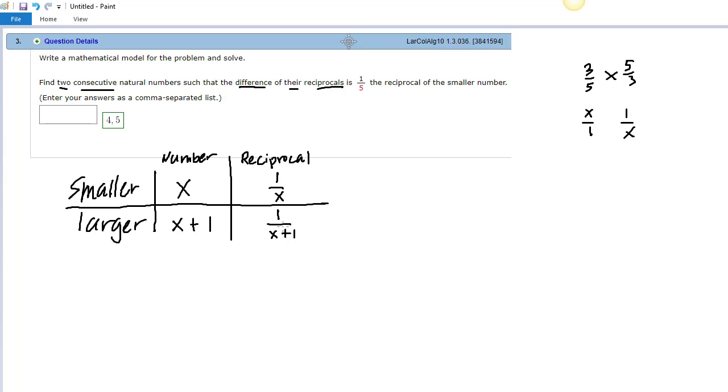So the difference between these two numbers is 1 fifth the reciprocal of the smaller number. The difference. Difference means take this and you subtract these two numbers.